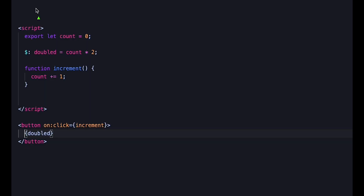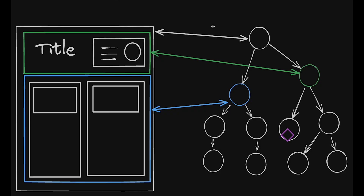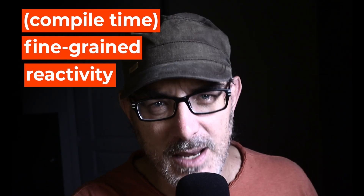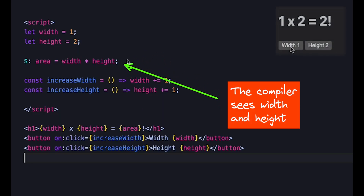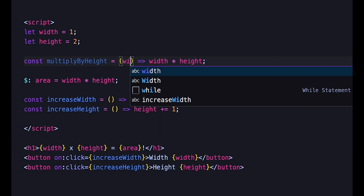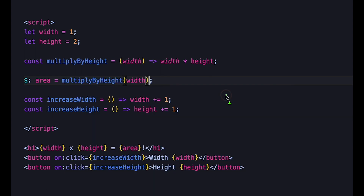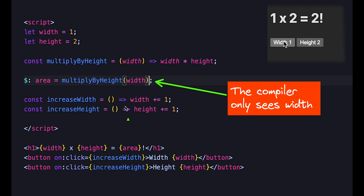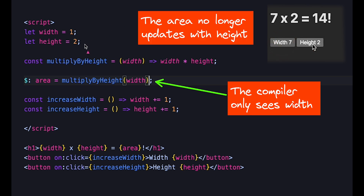Svelte uses the compiler to analyze the code. It detects which variables express state and determines the dependency graph that links these variables. I've explained how that works in another video. When a variable changes, the application knows exactly which part of the interface to change — that's what we mean by fine-grained reactivity. But this compiler-based approach has a problem: you can only express reactivity if you send the right signals to the compiler. For example, the compiler can only see the dependency on the width state variable when it analyzes the code at the dollar colon label. With complex state, the compiler's implicit magic becomes a constraint instead of a strength.